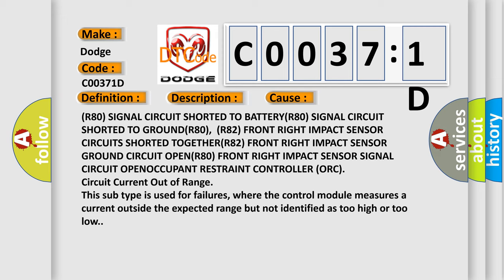R82 front right impact sensor ground circuit open, R80 front right impact sensor signal circuit open, Occupant Restraint Controller (ORC) circuit current out of range. This subtype is used for failures where the control module measures a current outside the expected range but not identified as too high or too low.